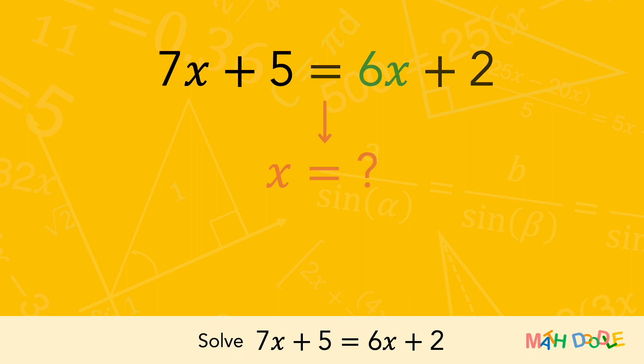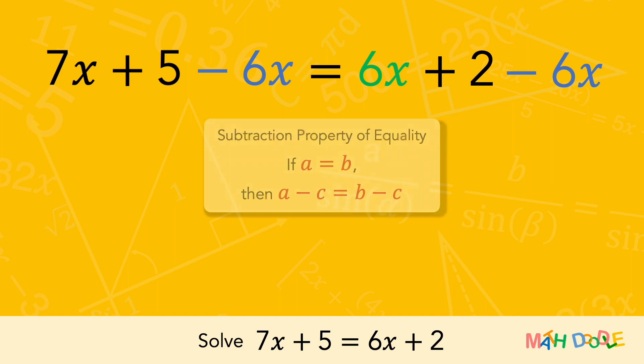Let's first eliminate 6x on the right side of the equation by subtracting 6x. It is important to treat both sides of the equation equally. When we subtract a number from one side of the equation, we must subtract the same number from the other side.